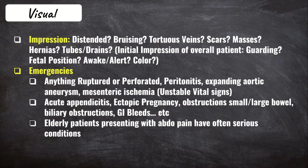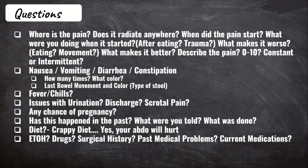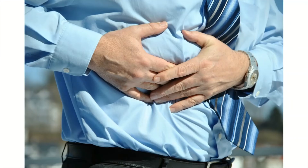Give extra attention when assessing elderly patients with abdominal pain, as their pain can often be from a life-threatening condition if left untreated. Now let's go into the questions you should be asking. Start with pain: where is it? Does it radiate anywhere? When did it start and what was the patient doing? Did it start after eating, and if so, what were they eating? What makes it worse? What makes it better? Ask them to describe the pain and whether it is intermittent or constant.